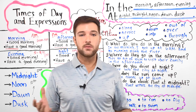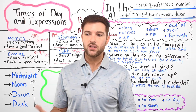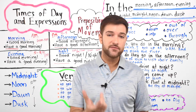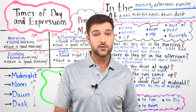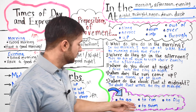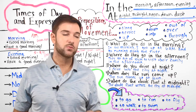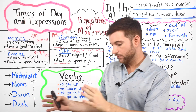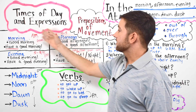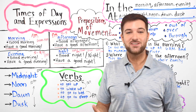Before we end, remember that time phrases generally come at the end of sentences unless you want to stress the time of day, in which case you put the time phrase at the beginning. Also, the preposition of movement must come after a verb of motion — a verb like to go, walk, run, swim, or fly that takes you from one place to another. That's it for lesson 15 on times of the day, expressions, and prepositions of movement. Thanks for watching — see you next time!